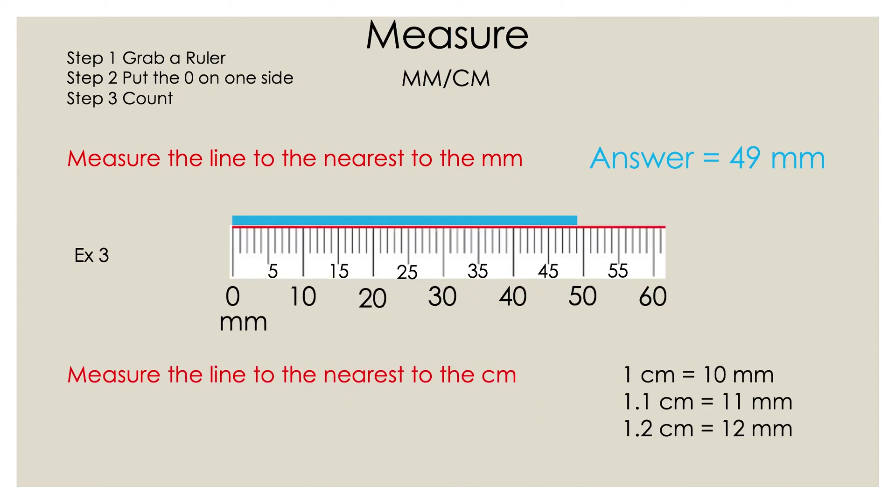Now we're going to go ahead and convert that to the nearest centimeter. Now we're going to go ahead and as you can see, once again, one centimeter is equal to 10 millimeters. Now we're going to be working back the other way. So you get answer is equal to 4.9 centimeters.